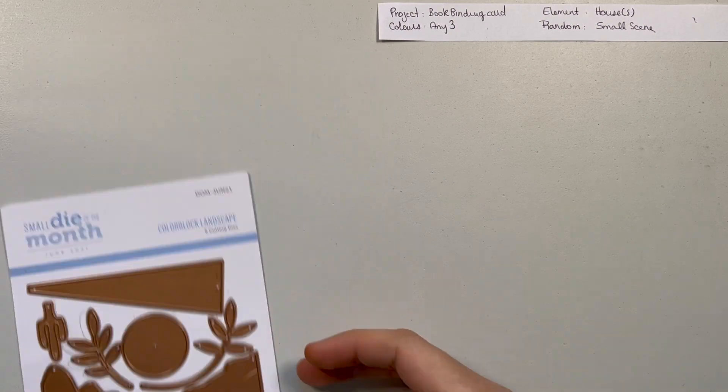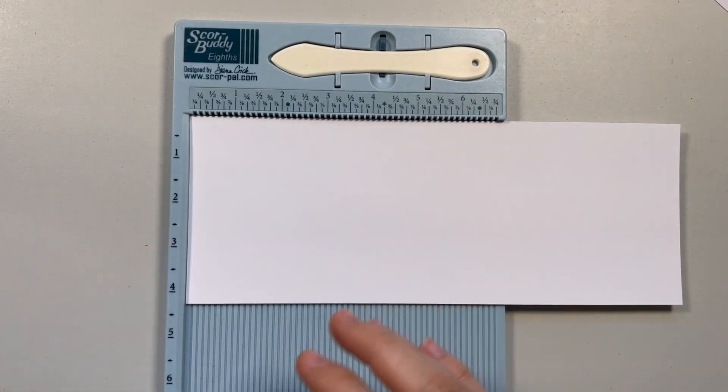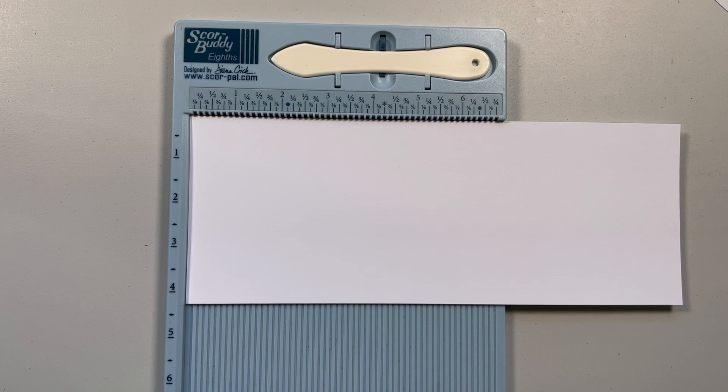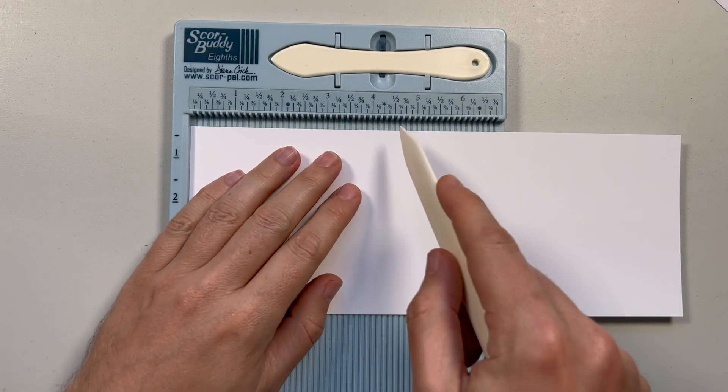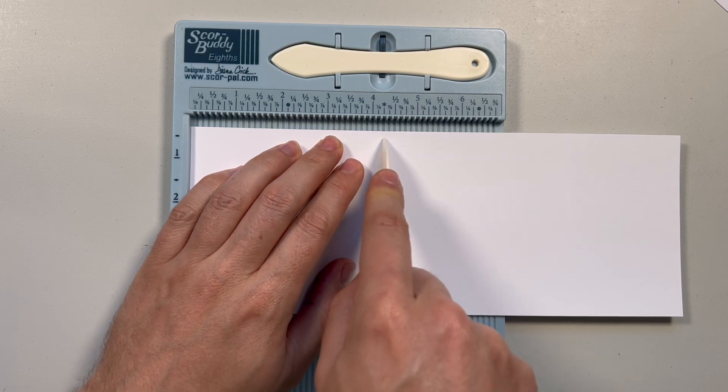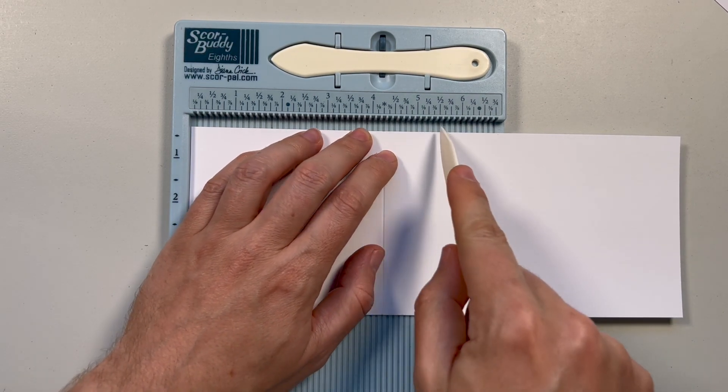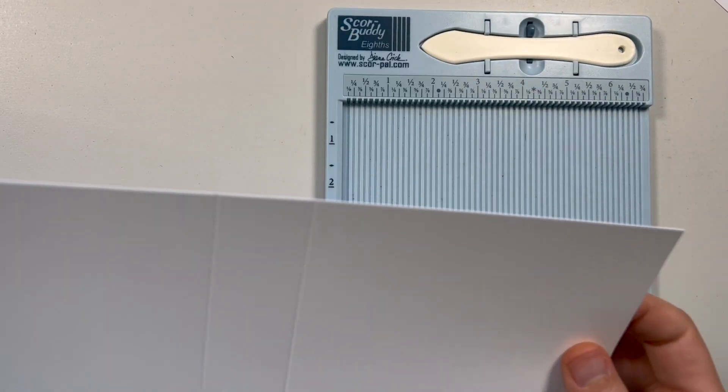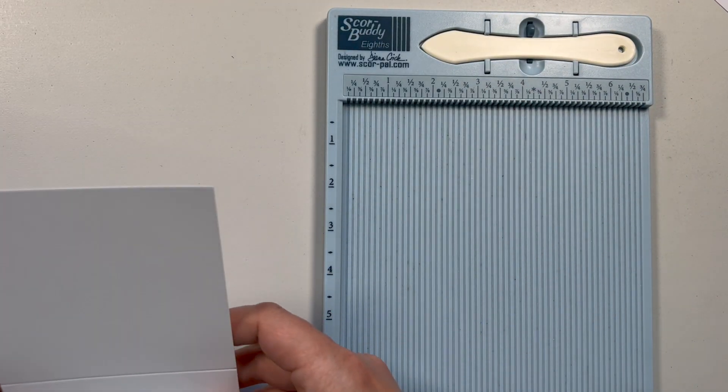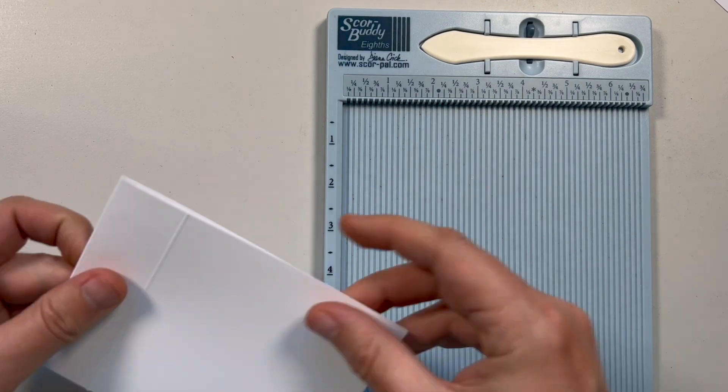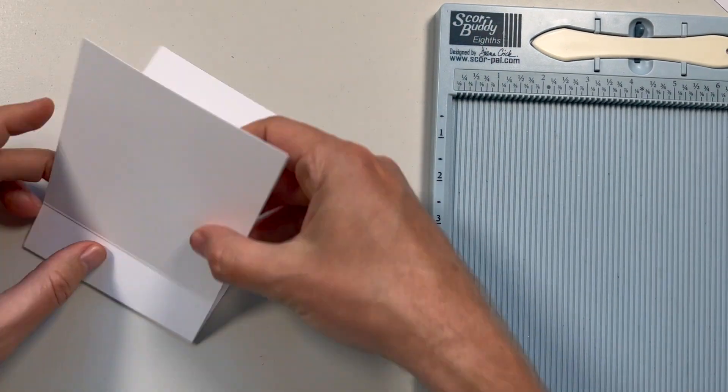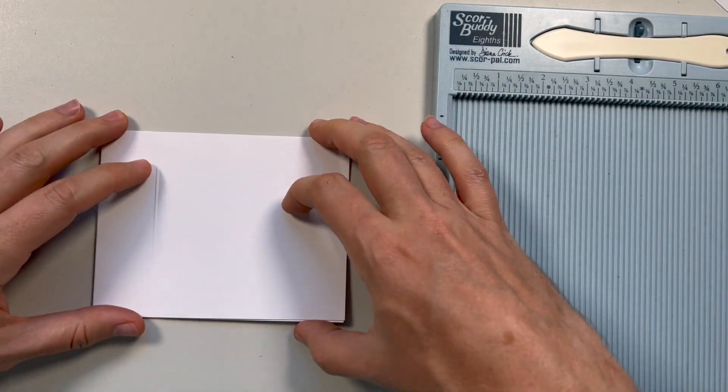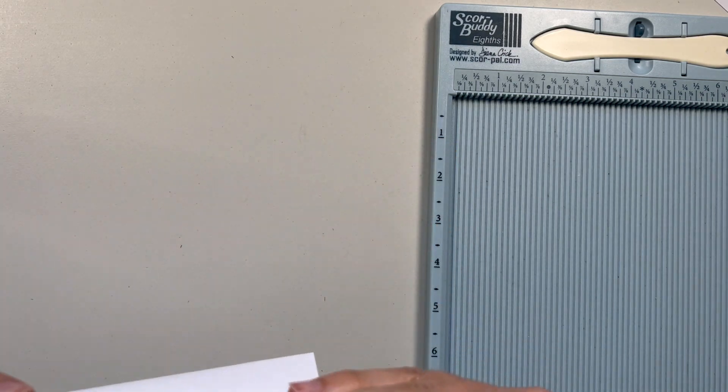This will be the die that I'll be using for this card to make the scene. I'll keep moving it to the top right hand corner whenever I remember, and it's going to be the criteria. The first one is it needs to be a book binding card. So I'm taking pretty much an A2 size card, but I'm folding it at four and a quarter and five and a quarter.